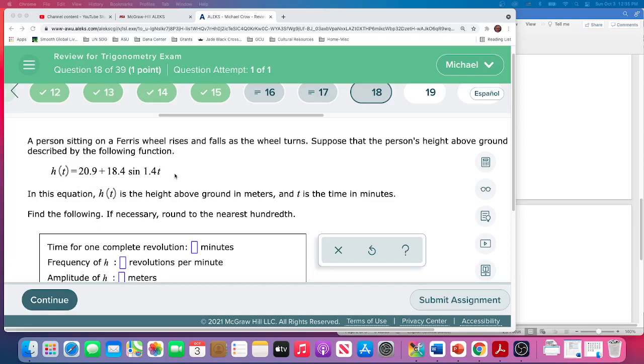We probably could graphically get the answer because they do want it to the nearest hundredth. That would be one way. However, this is still in our format of amplitude is in front of the sine, right? This is going to give us our period. So time for one complete revolution, they've just changed the language on us. One complete revolution is a period.